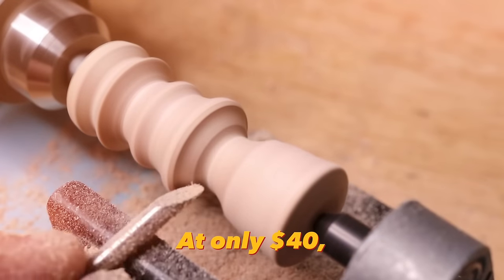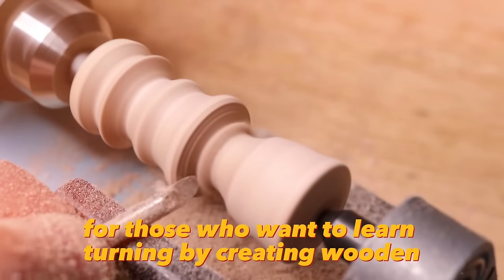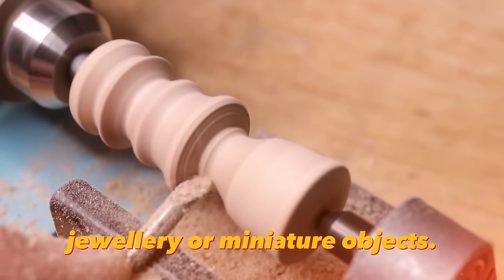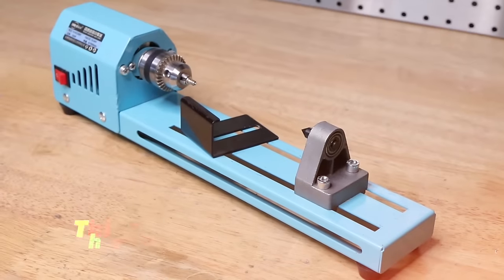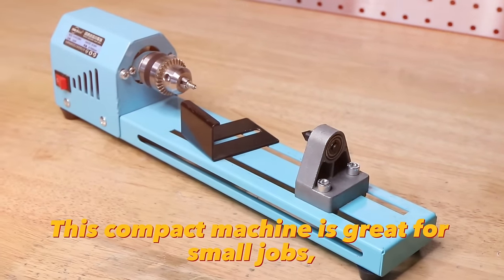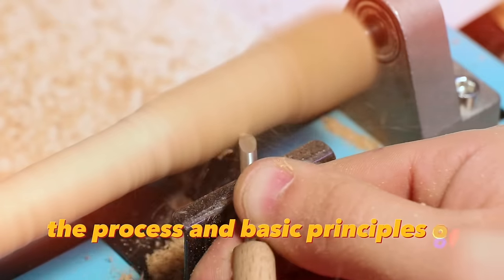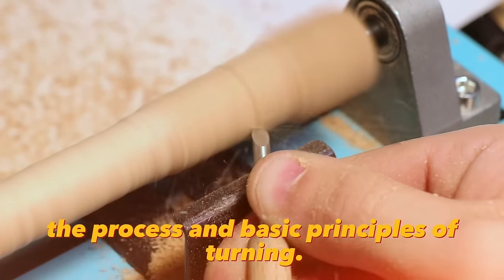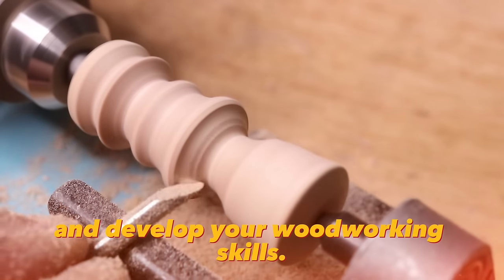At only $40, the mini lathe is the perfect start for those who want to learn turning by creating wooden jewelry or miniature objects. It comes with everything you need to get started. This compact machine is great for small jobs, allowing beginners to familiarize themselves with the process and basic principles of turning. You can use it to create unique decorative items and develop your woodworking skills.